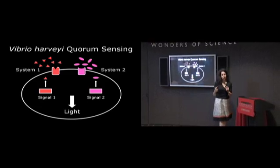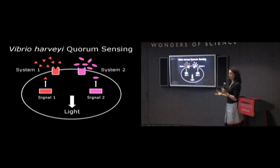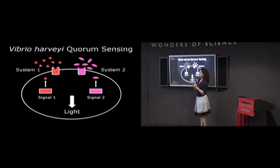When we got those results, we wondered why you would have two systems. If the information encoded in those two molecules is identical, two systems is not better than one. It's only better if these two molecules mean something different to the bacterial cell.